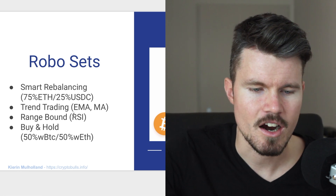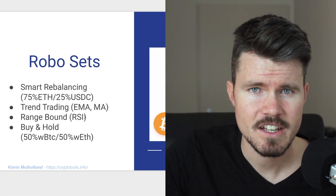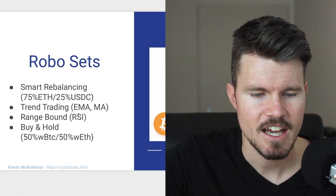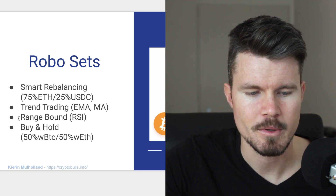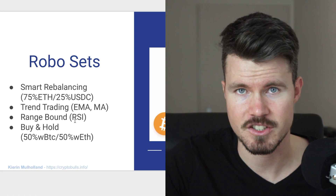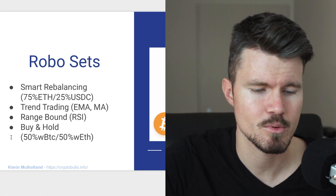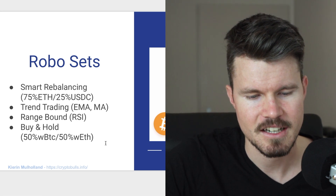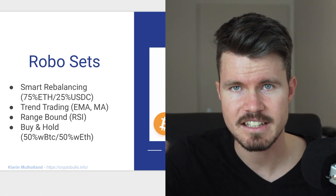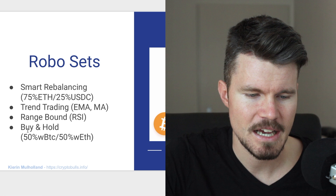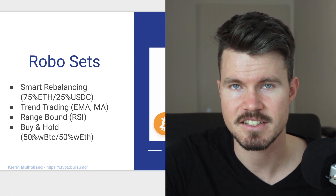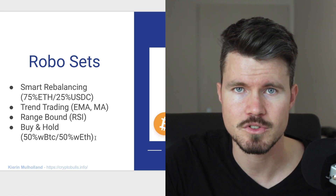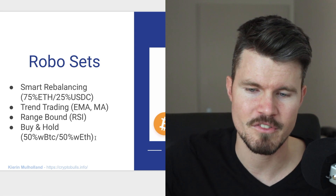Range bound uses RSI — the Relative Strength Index — which highlights when an asset is overbought or oversold. The same as with the moving average, the asset gets bought or sold depending on what the RSI is showing on the charts. Then you've got buy and hold sets, for example 50% wrapped BTC and 50% wrapped ETH. This is similar to smart rebalancing: should BTC rise and the 50/50 balance shift, a little BTC gets sold to restore the weighting. You've got many different options and you can select the set you think will outperform the market best.